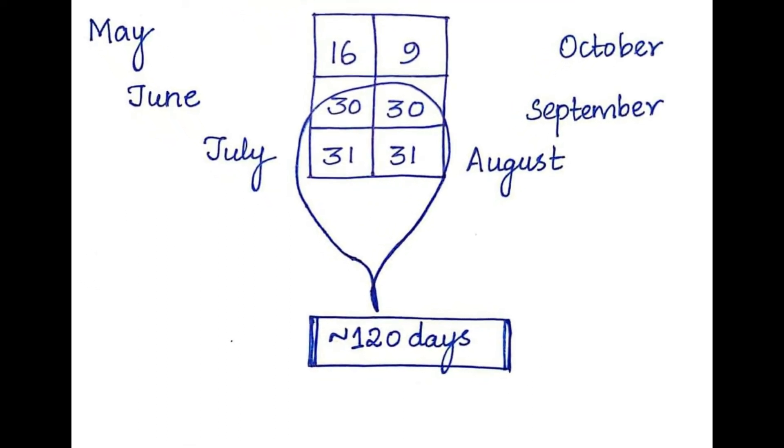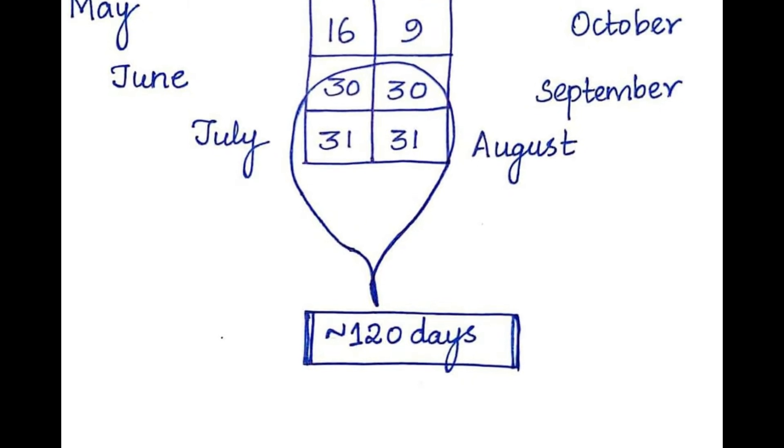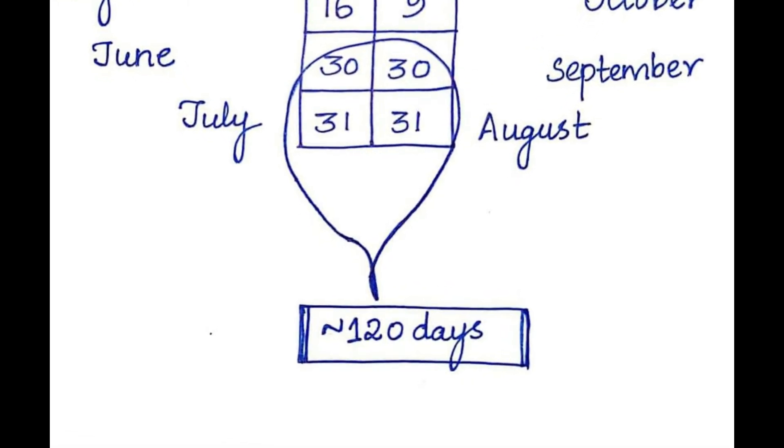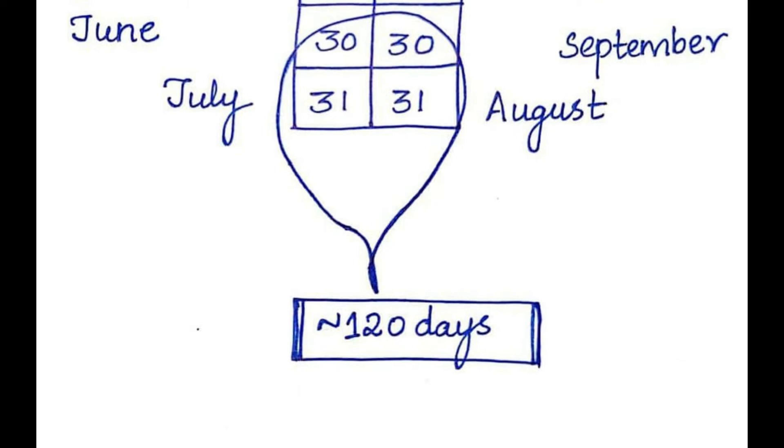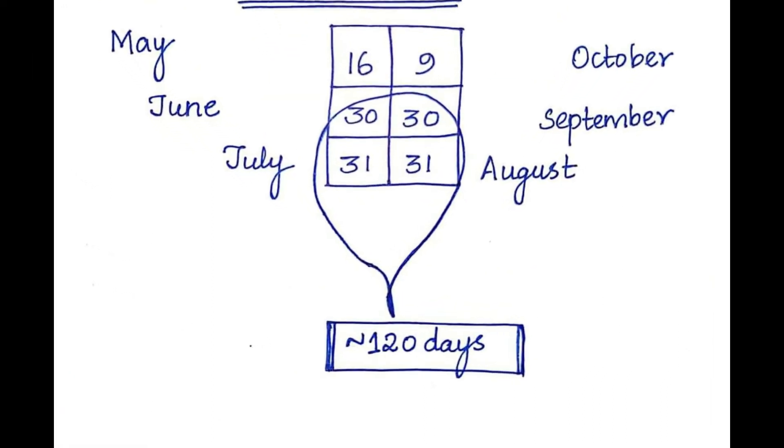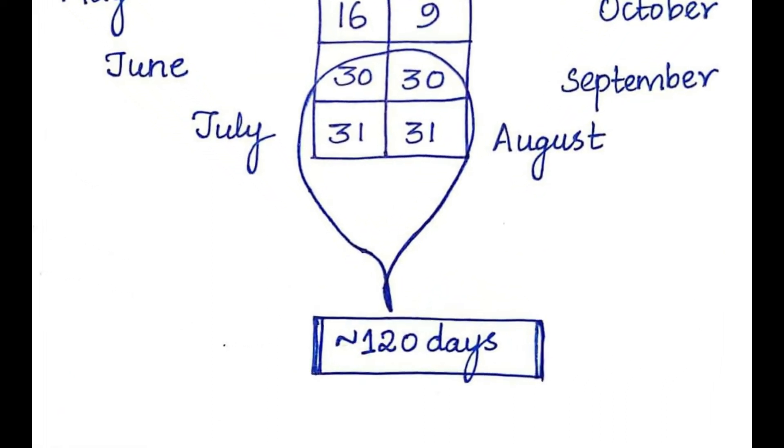We have 16 days in May, 30 in June, 31 in July, 31 in August, 30 in September and 9 in October. I will focus only on the 4 months in the center which gives me approximately 120 days.